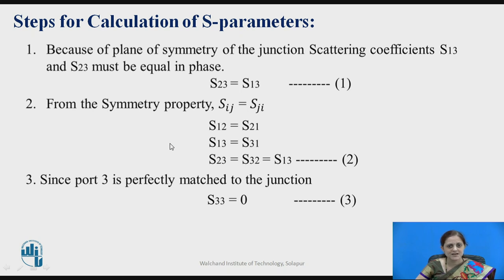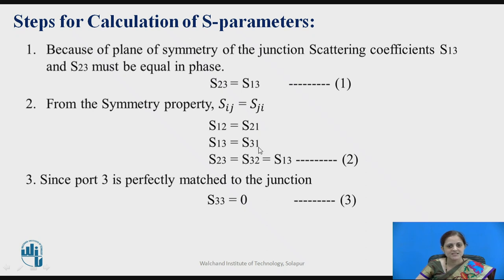How to calculate the S-Parameters — we will see it stepwise. Step 1: because of the plane of symmetry of the junction, scattering coefficients S13 and S23 must be equal in phase. That is, if the input is applied to port 3, the outputs at port 1 and port 2 are equal. From the symmetry property, Sij equals Sji, giving S12 = S21, S13 = S31, and S23 = S32. From equation 1, S23 is also equal to S13.